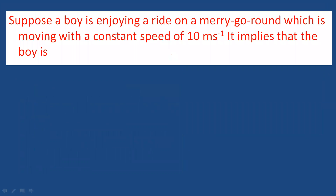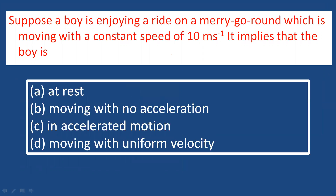Suppose a boy is enjoying a ride on a merry-go-round moving with a constant speed of 10 meters per second. This is uniform circular motion — the speed is constant but the direction changes, so the velocity changes. Because velocity changes, there is acceleration. Therefore, the merry-go-round represents accelerated motion, and option C is the correct answer.